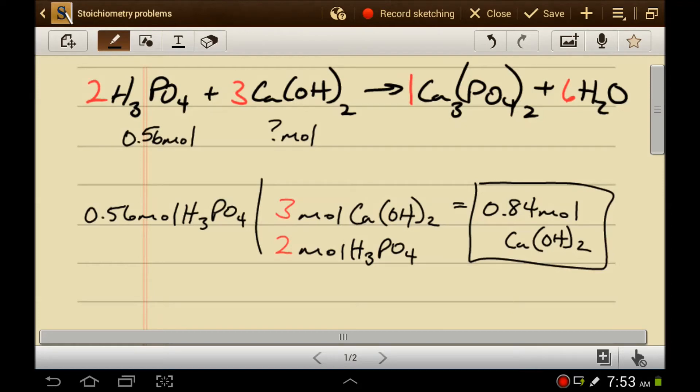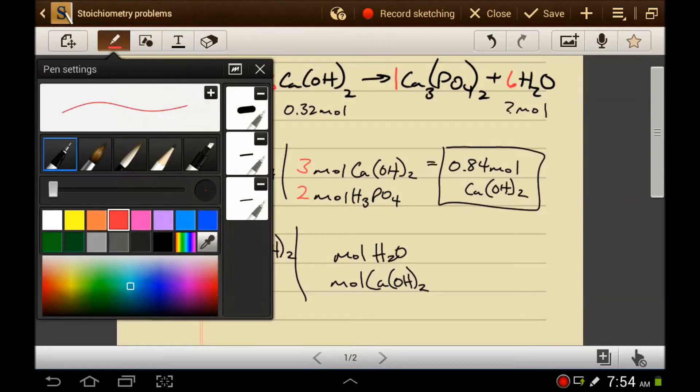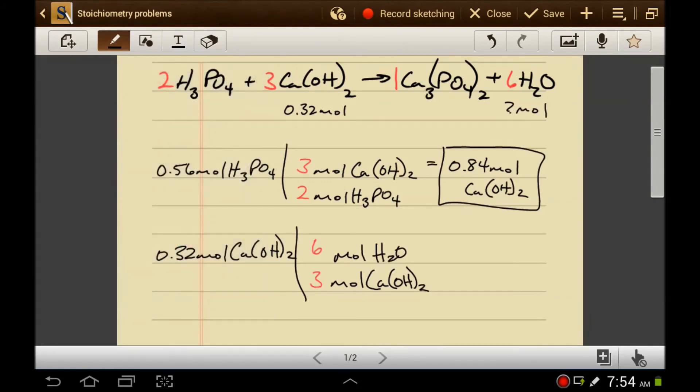We could do it again, and we could find out, perhaps if we started with 0.32 moles of calcium hydroxide, how much water would we make? We would say 0.32 moles of calcium hydroxide to start with, and then what you're starting with goes on the bottom, calcium hydroxide. And what you're looking for goes on top, water. And then the ratio is 6 to 3. So 0.32 times 2 is 0.64 moles of water.